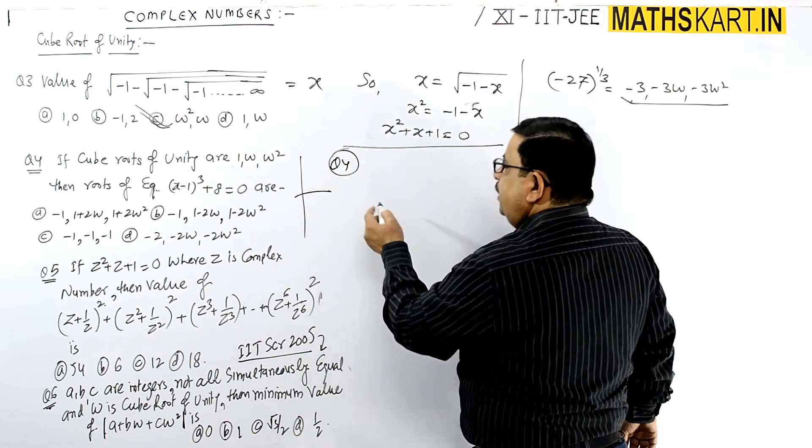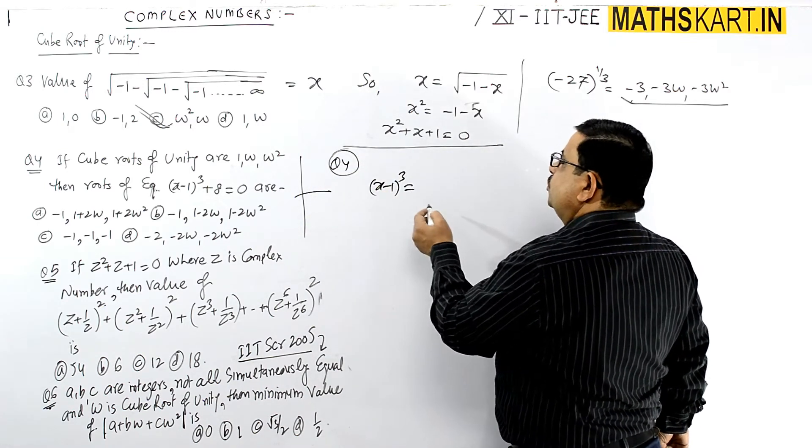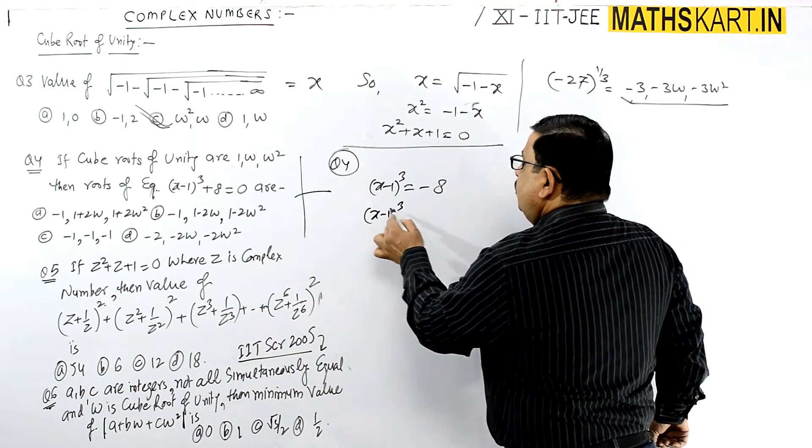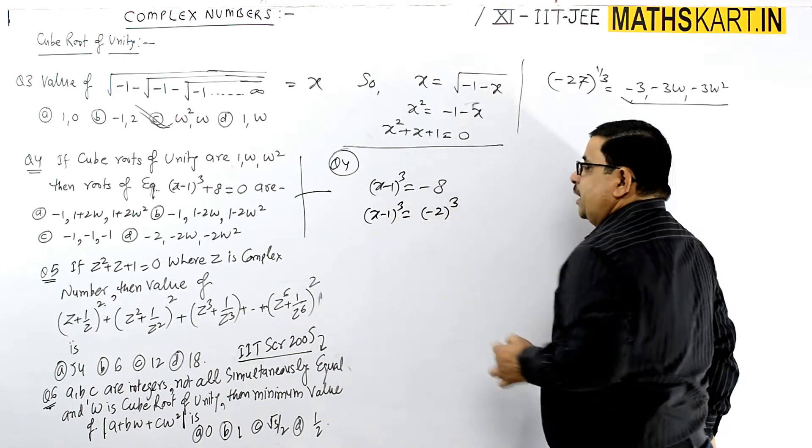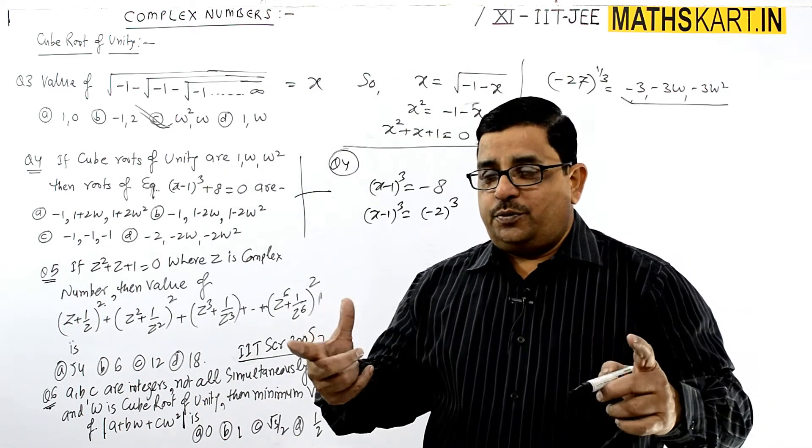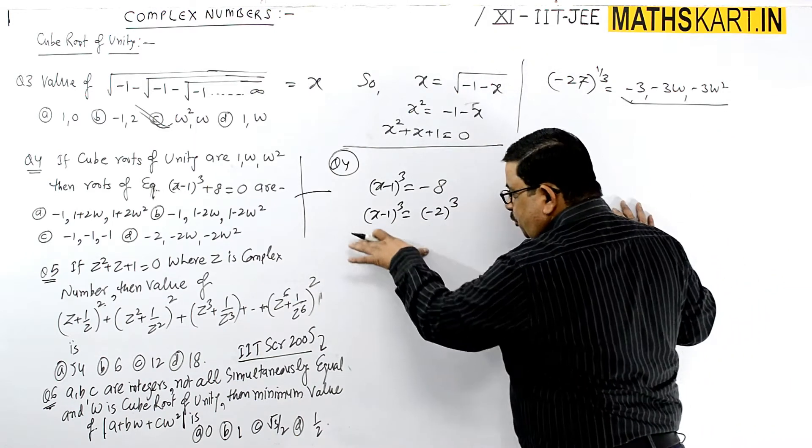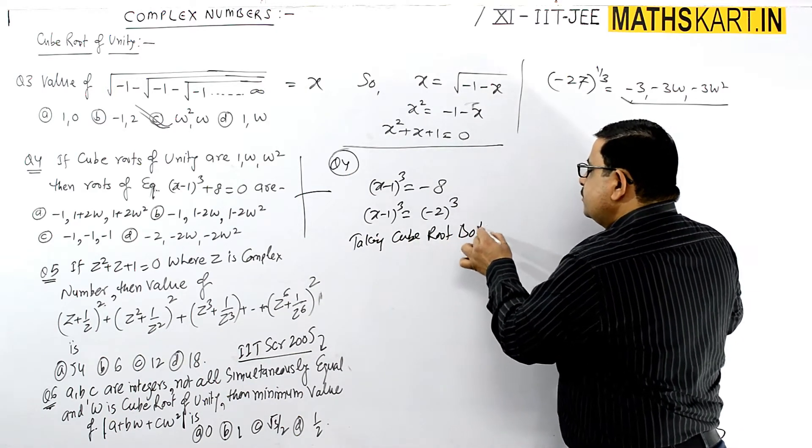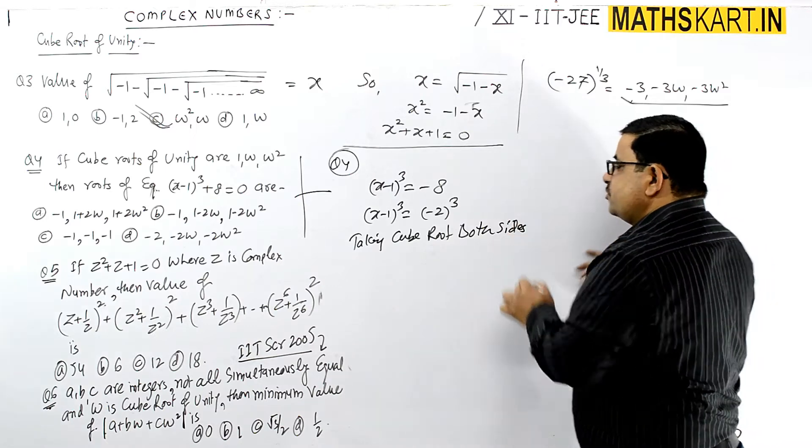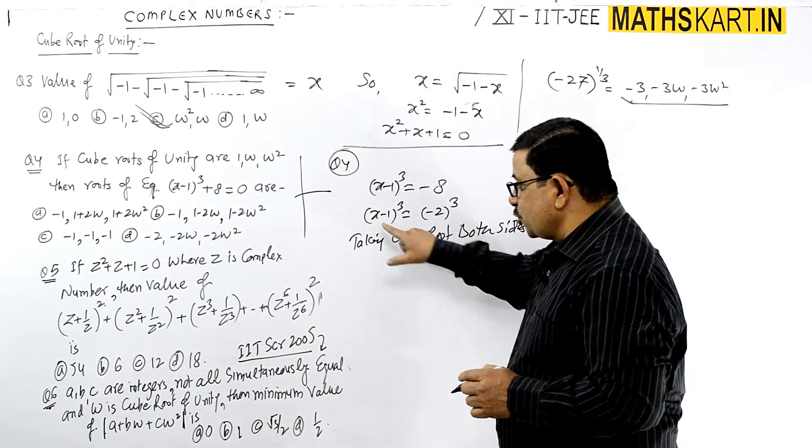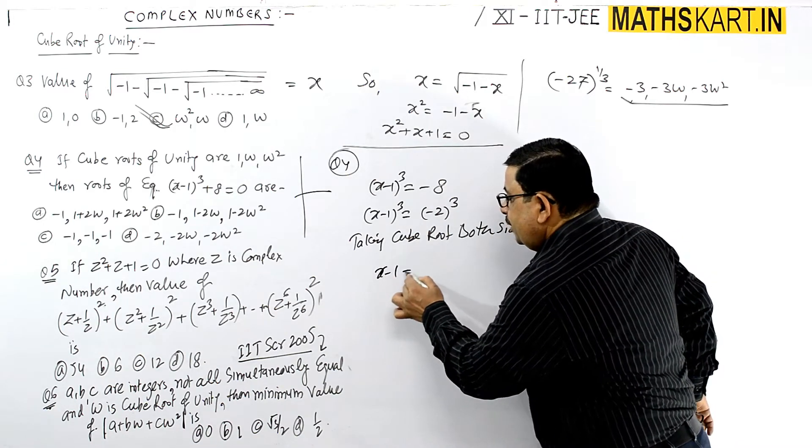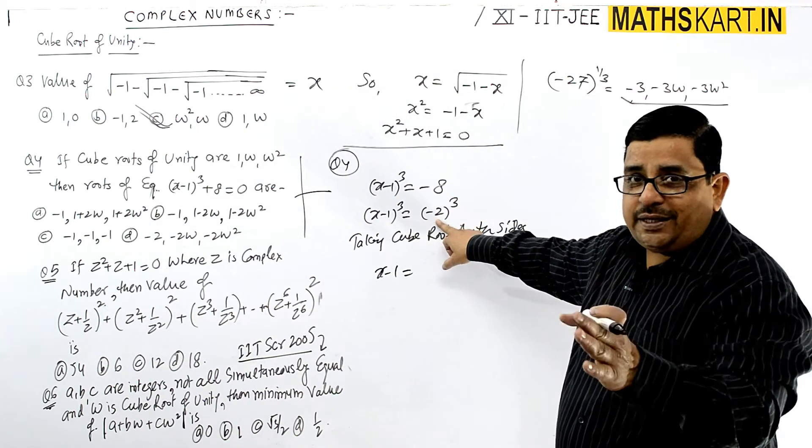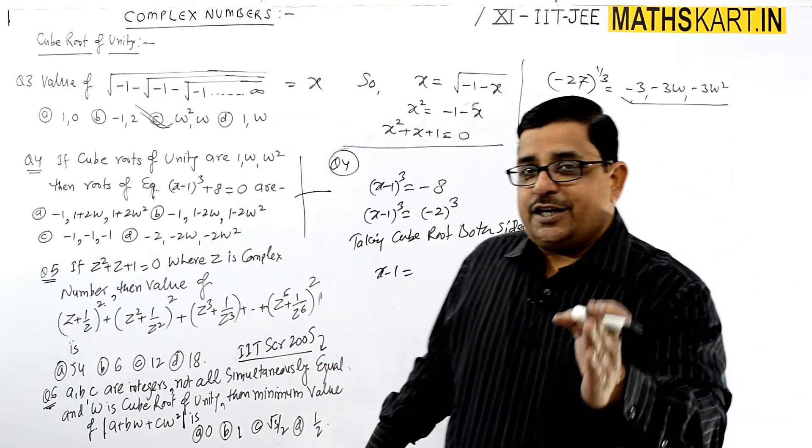X minus one whole cube equals to minus eight. Minus eight can be written as minus two whole cube. Taking cube root both sides, x minus one can be written as minus two.